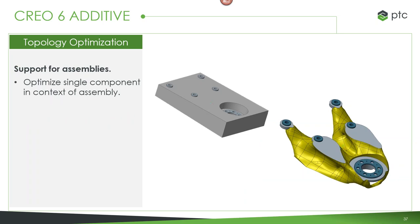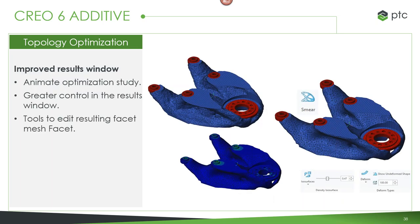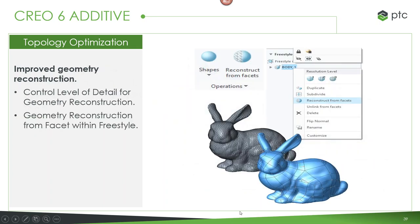In topology optimization, we made some changes. It now supports working in the context of assemblies. There are also improvements to results generated — better animations, better control over results, and more tools to edit the resulting geometry. Previously, results were always as a freestyle shape within Creo. Now you can reconstruct it with facets and choose the level of detail you want. For example, here you can see subdivisional nodes either widely spaced out or very close together, giving you control over how easily you can further modify the resulting shape.